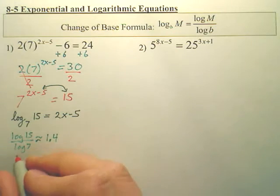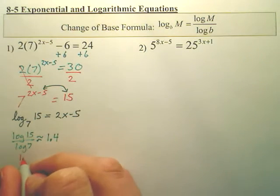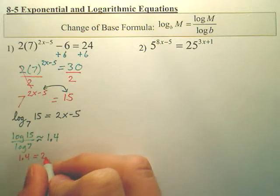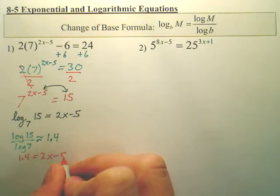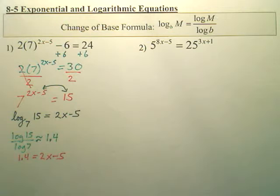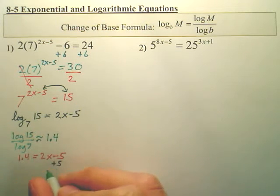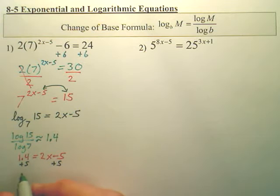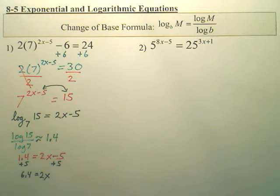So my new equation is simply going to be 1.4 equals 2x minus 5. Can you solve that? Yeah. You've just got to deal with a fraction. So your next step would simply be to add the 5 over. So you have 6.4 equals 2x. And then divide by what? Divide by 2.